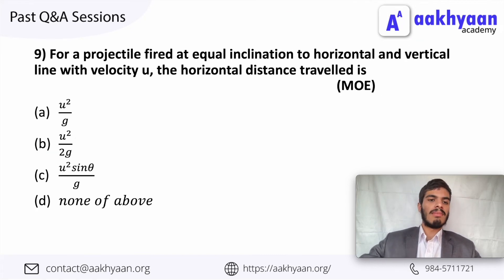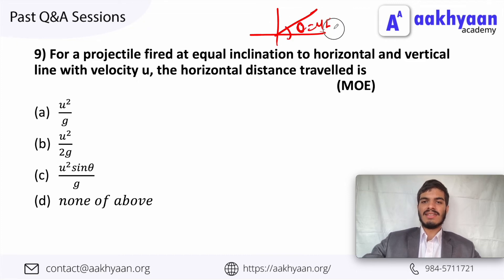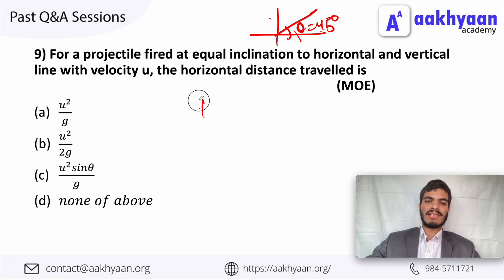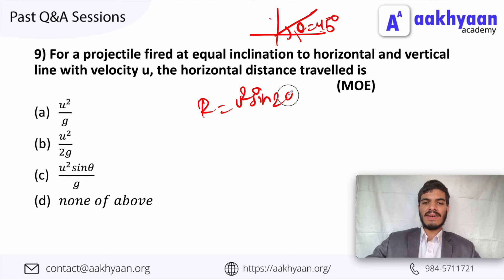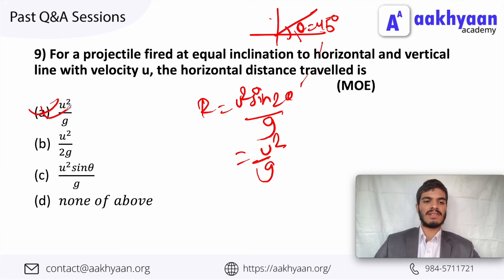In the next problem, for a projectile fired at equal inclination — that is theta equals 45 degrees — the horizontal distance travelled equals u squared sin 2theta divided by g, which equals u squared sin 90 degrees divided by g, equals u squared divided by g. This is the maximum value and is the correct option.